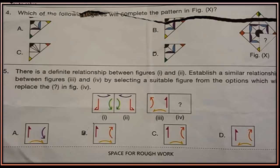Question 4: Which of the following figures will complete the pattern in figure X? Now look at figure X — one part is missing. Choose from options A, B, C, D which part will complete this pattern.